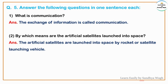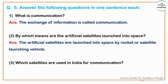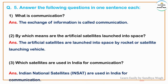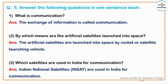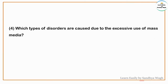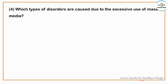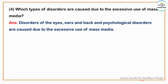Answer: The artificial satellites are launched into space by rocket or satellite launching vehicle. Which satellites are used in India for communication? Which types of disorders are caused due to the excessive use of mass media? Answer: Disorders of the eyes, ears, and back, and psychological disorders are caused due to the excessive use of mass media.